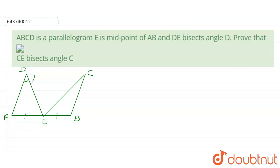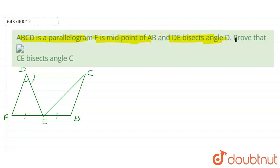So hello students. In this problem we have given that ABCD is a parallelogram and E is the midpoint of AB, and DE bisects angle D. Then we have to prove that CE bisects angle C.